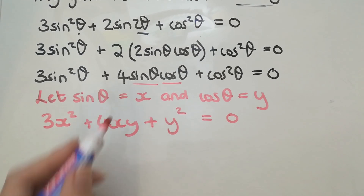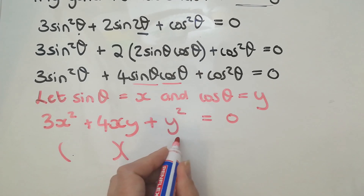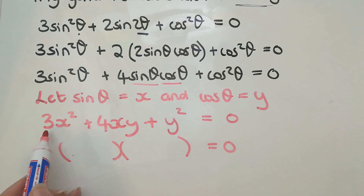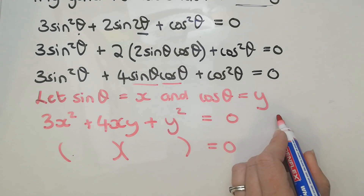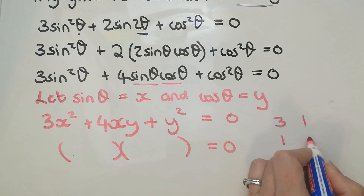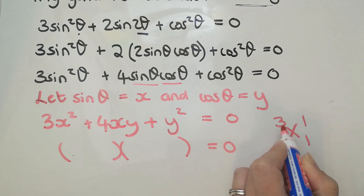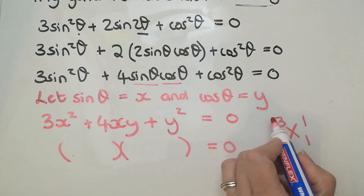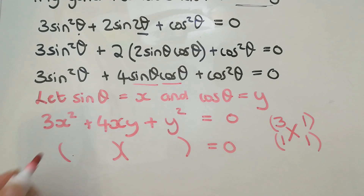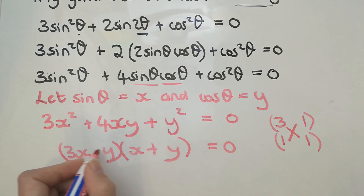Your ability to factorize is really critical here. I want factors of 3 and 1 that give me 4 in the middle — that's relatively straightforward. I'll have (3x + y)(x + y): 3 times 1 is 3, and 1 times 1 is 1, so I've got 3 and 1 which add to 4. They're both going to have the same sign, so my brackets go (3x + y)(x + y) with both pluses.